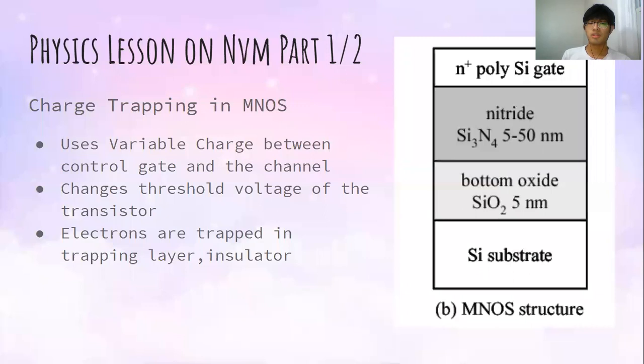The physics behind MNOS is charge trapping. It uses a variable charge between the control gate and the channel, which causes a change in threshold voltage of the transistor. As a result, electrons are trapped in the trapping layer — in MNOS, that trapping layer is an insulator, which is nitride.